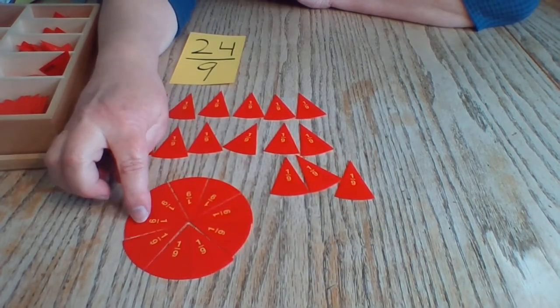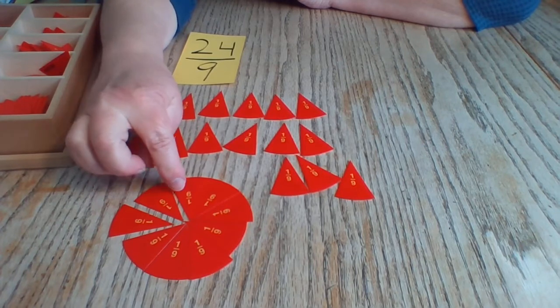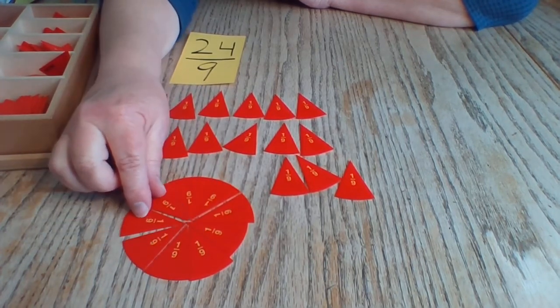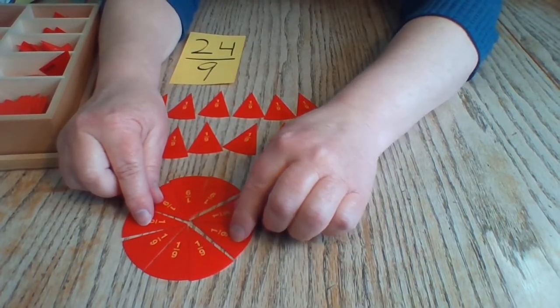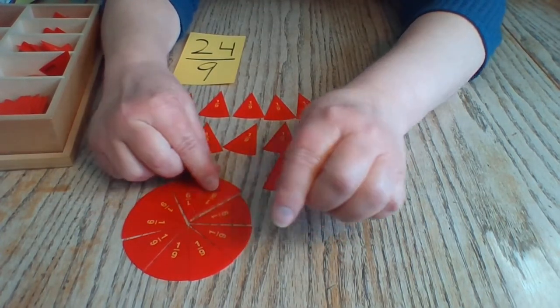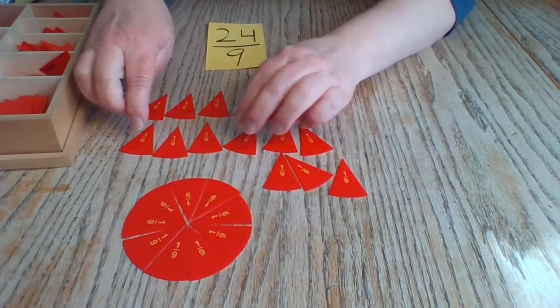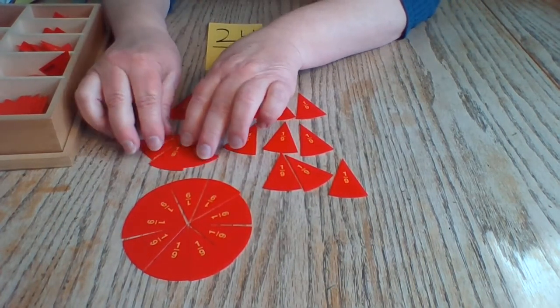Let's make sure that's nine ninths. I'll pull this one out. One, two, three, four, five, six, seven, eight, nine. Yes, that was nine ninths. Let's see if we can make another whole. One, two, three put together.